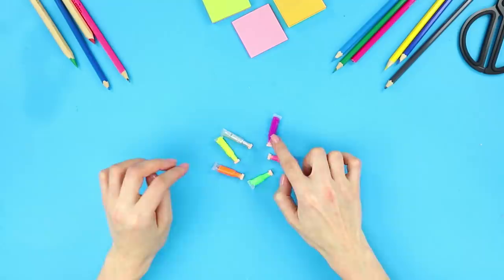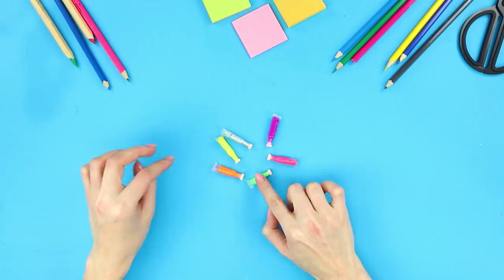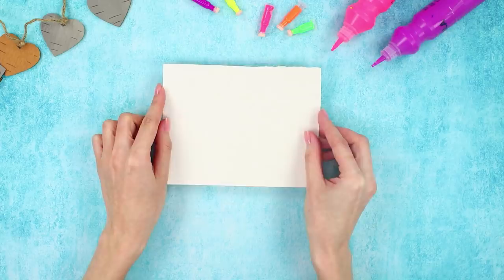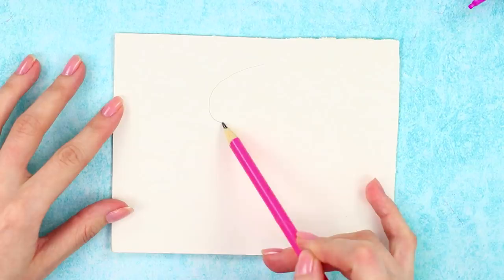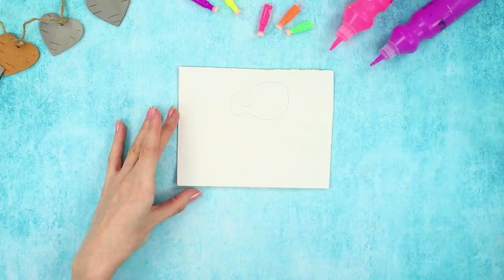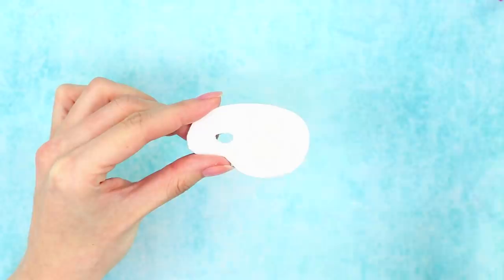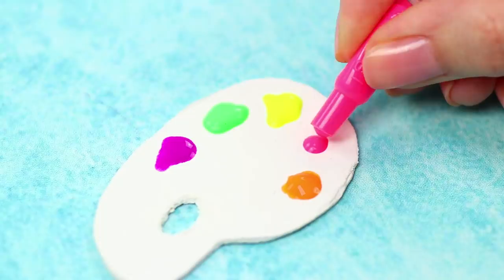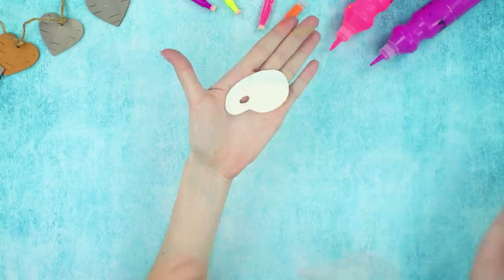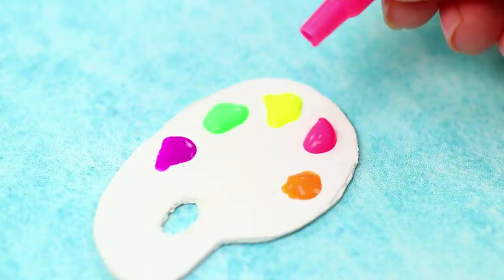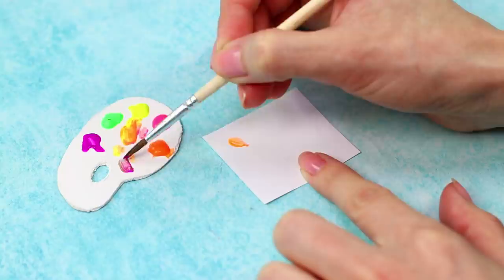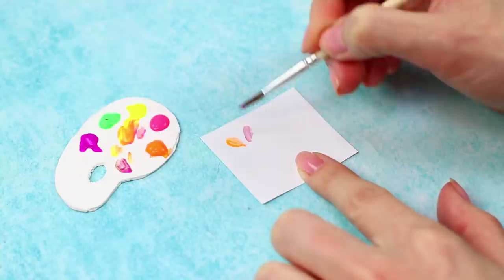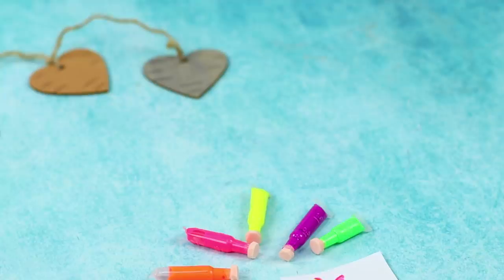And to feel like a real artist, you can use our next life hack! You need a piece of cardboard. Draw a palette with a simple pencil. Cut it out along the outline. Cover the palette with white acrylic paint. Squeeze out paints! Every artist's most crucial tool is ready to go! You can mix colors to whatever shade you want even on such a tiny palette. Now your favorite activity will be even more fun, and your drawings will be even better and more professional.